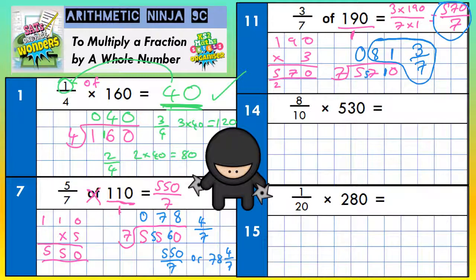Question 14, let's do the same method again, so put the invisible 1 in, and go top times top, 8 times 530, bottom times bottom, 10 times 1. Let's work that out.